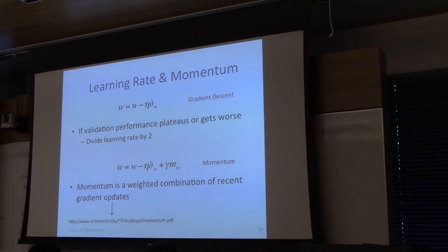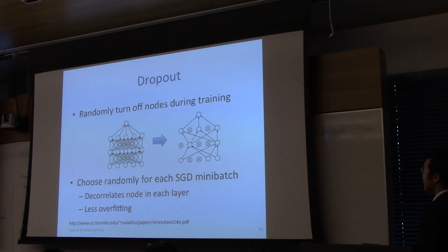The step size, basically, because this is non-convex, sometimes you have to be a little bit careful with the step size, and so the typical trick is as validation performance plateaus or it gets worse, you just exponentially decay the step size.